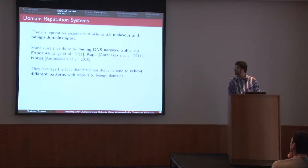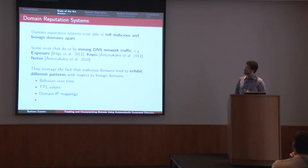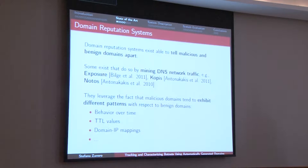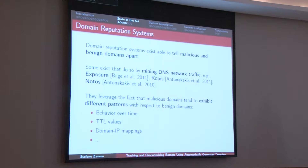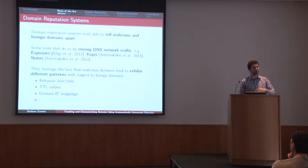There are some systems already that are working on telling you if a domain is benign or malicious. The most famous one is Exposure, built by my colleague Leila Bilge formerly at Eurecom and now at Symantec Research. You can go to exposure.iseclab.org and you will see a list of malicious domains that have been automatically found out by correlating data. There's a paper by Leila cited in the references and I really recommend that you read it.